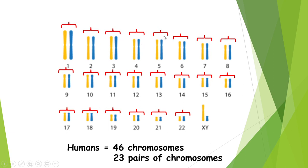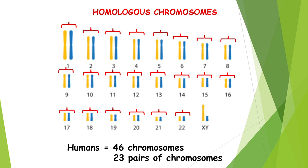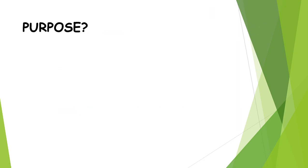The question then becomes: how do we create a cell that only has one set of 23 chromosomes? If you're getting half from your mother, you get one from each pair. That is what meiosis is — meiosis is the cell division that creates cells with half the number of chromosomes. One more terminology word: we refer to those similar chromosomes — same length, same genes — as homologous chromosomes.